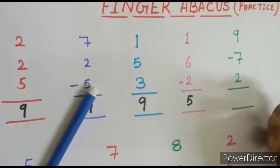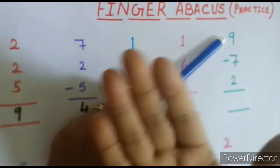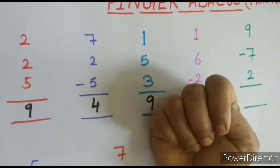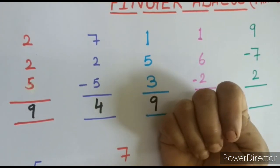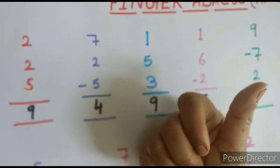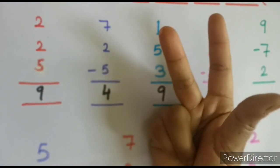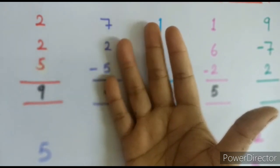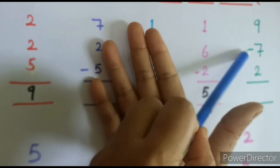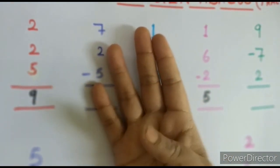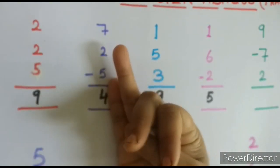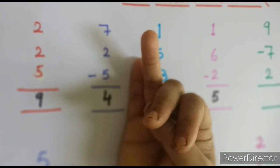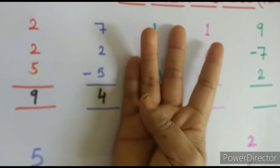Next example: for number 9, first open the thumb which represents 5, then open 4 more fingers: 5, 6, 7, 8, 9. Then the second number is minus 7 — for minus 7, we first close the thumb which represents 5, then close 2 more fingers: 6, 7. So 2 fingers are left. Then the third number is plus 2 — open 2 more fingers: 1, 2. Our answer is 4.